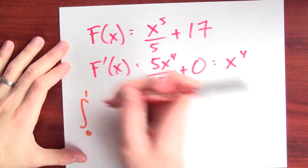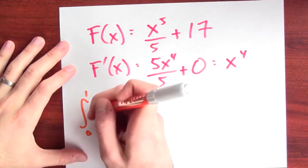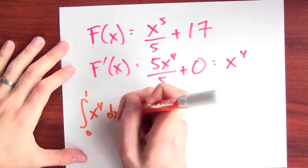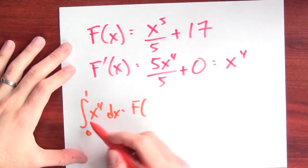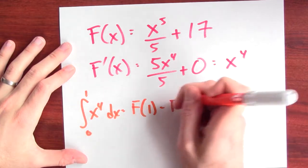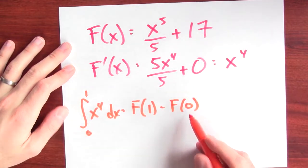Now, I apply the fundamental theorem. So, the fundamental theorem tells me that to integrate from 0 to 1 the function x to the 4th is the same as evaluating an antiderivative for x to the 4th at 1 and subtracting that antiderivative evaluated at 0.